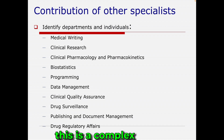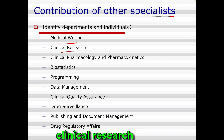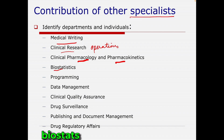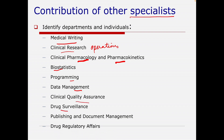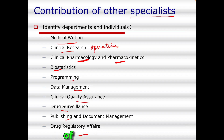CSR writing is a complex, collaborative effort — it is not a one-person job. The medical writing team is at the center, supported by clinical research operations, clinical pharmacologists, pharmacokinetics experts, biostatisticians, the programming team, data management team, quality assurance team, drug surveillance team, publishing team, regulatory affairs, and other scientists. This list is not exhaustive — it just gives examples of who becomes part of the CSR writing team.